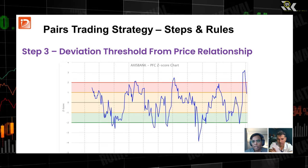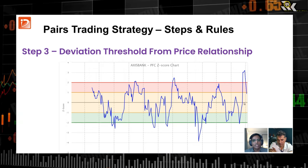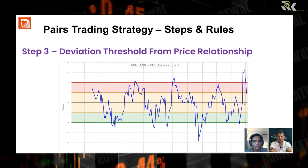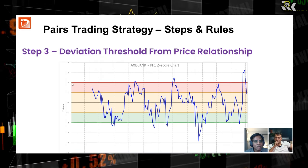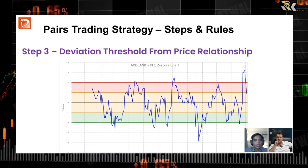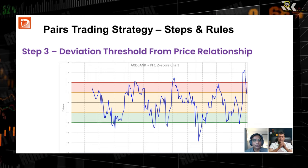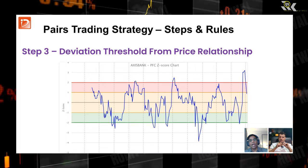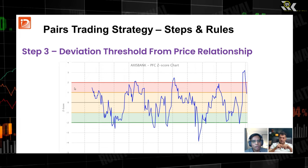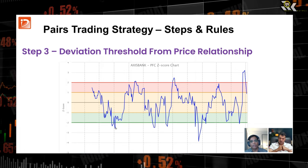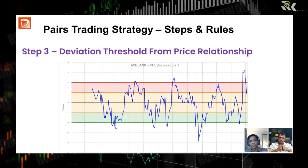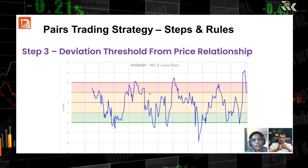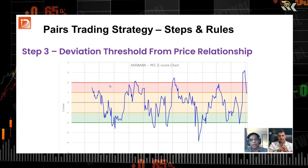On the Z-score chart, zero means the spread is close to the average. If it is above two, it is two standard deviations above your average spread between stock A and stock B. So we are measuring how many standard deviations the spread is away from the average price — it is kind of an oscillator. Sometimes it goes below, sometimes above, because they are mean-reverting. It has to go up and down, up and down — it cannot be flat.